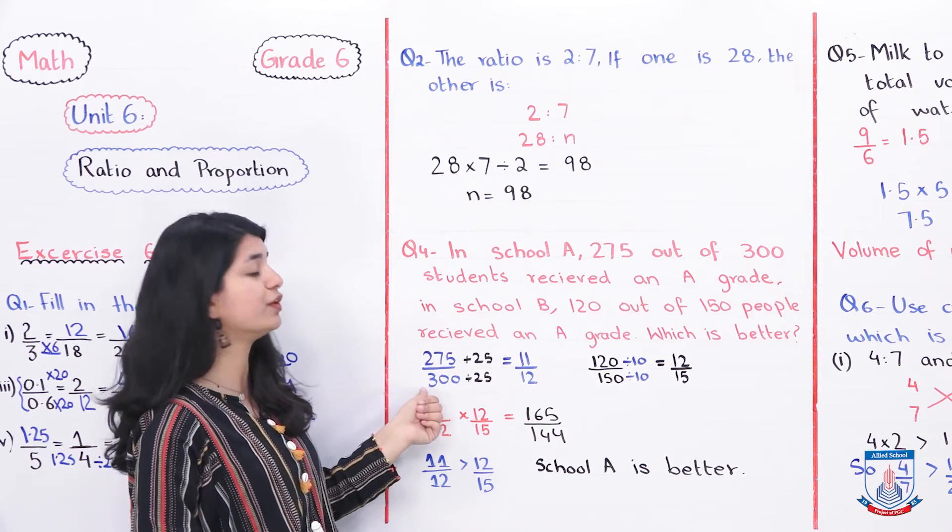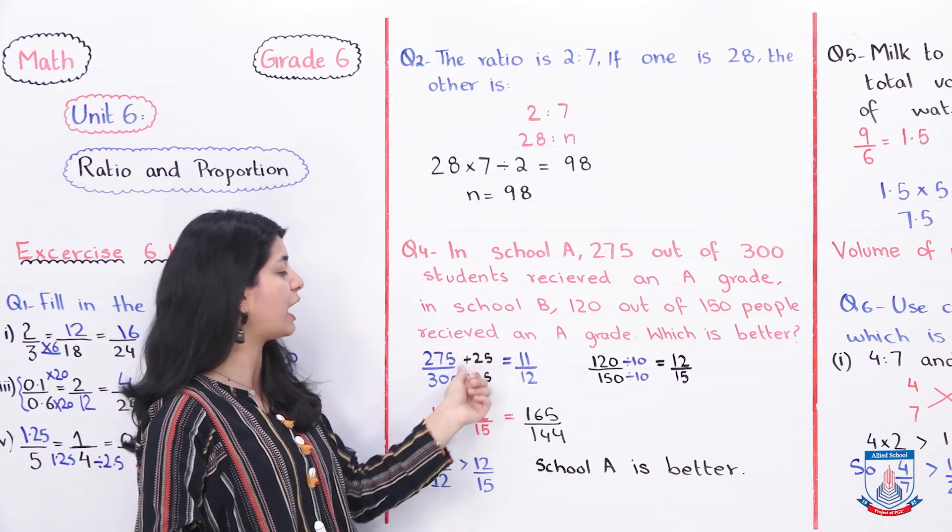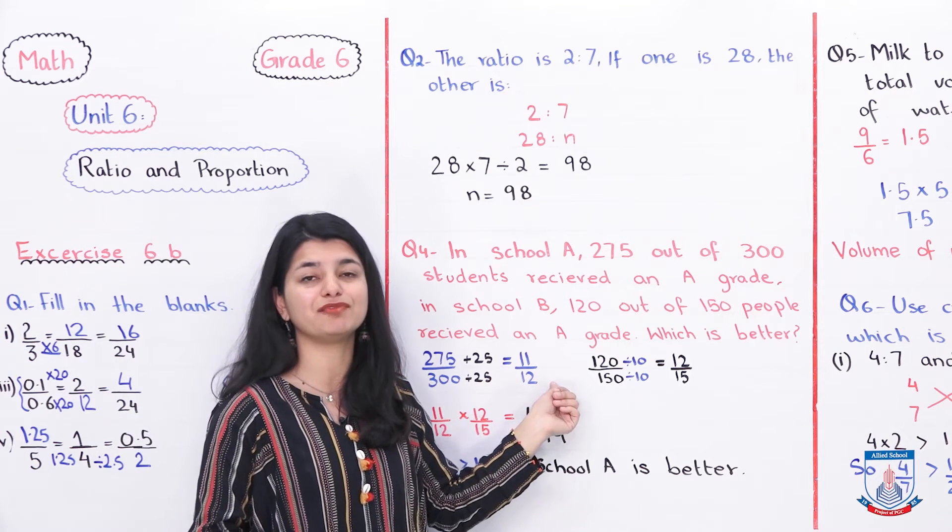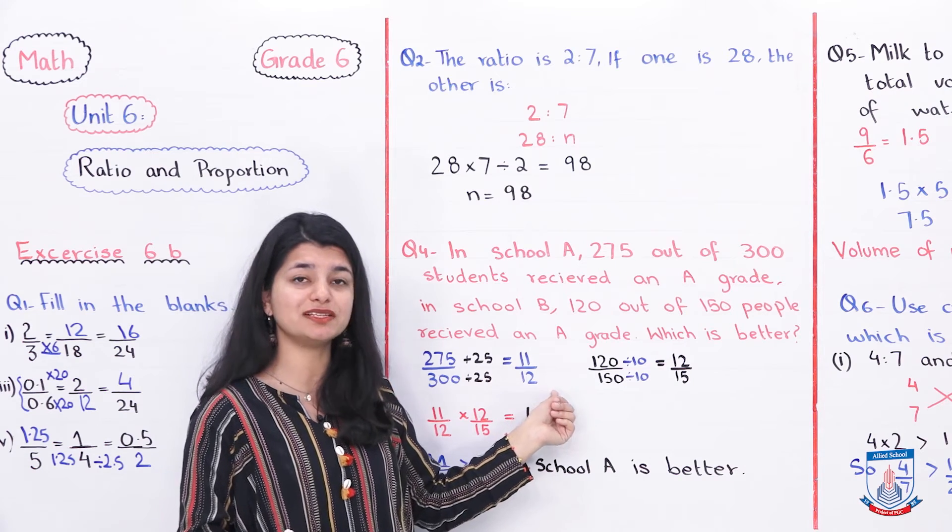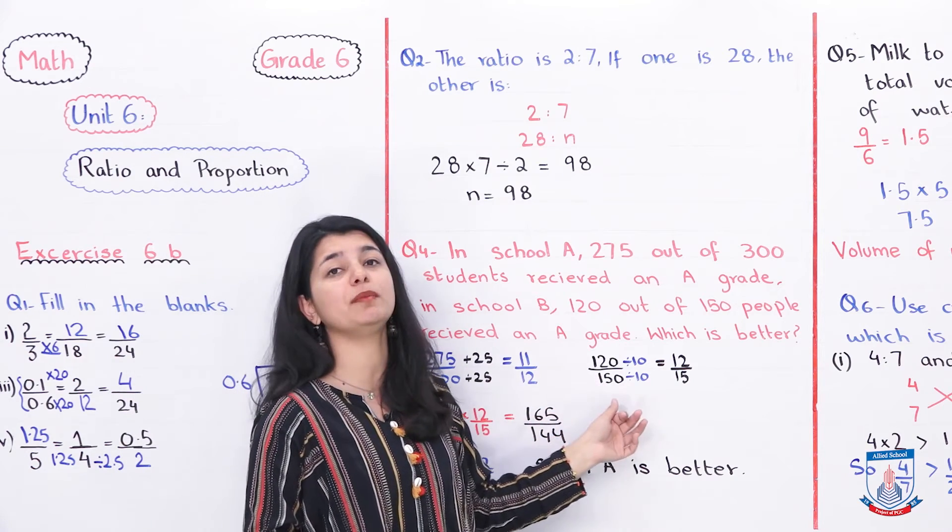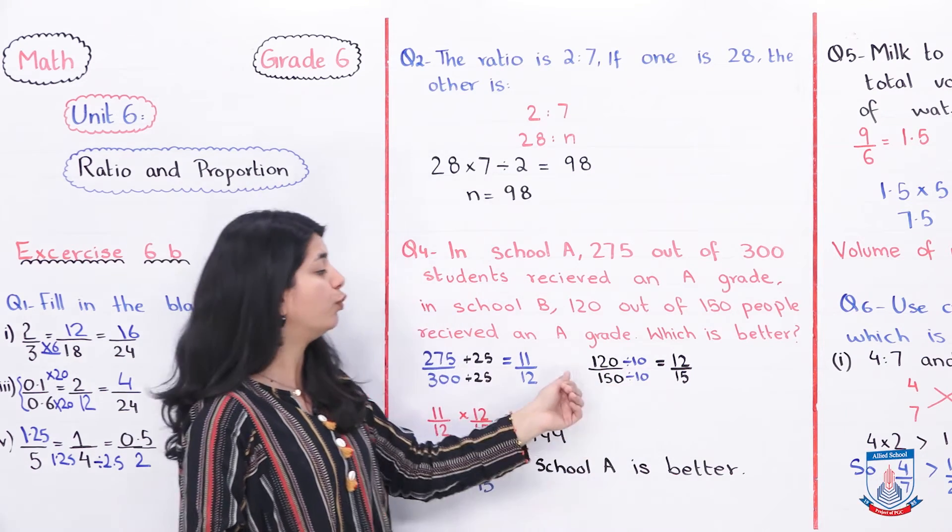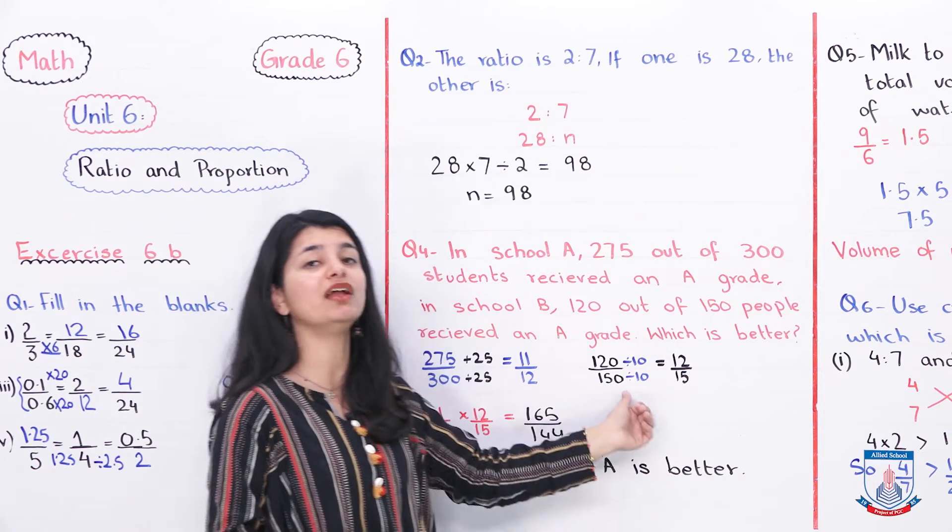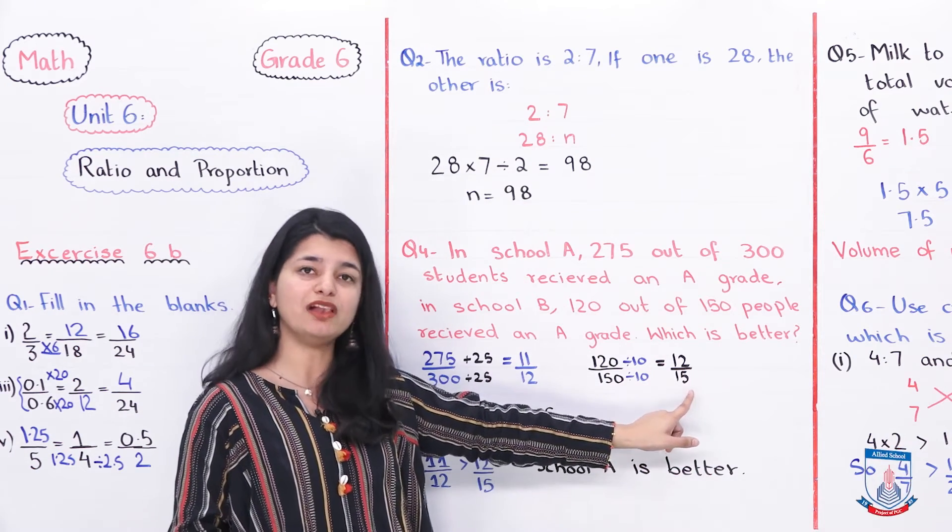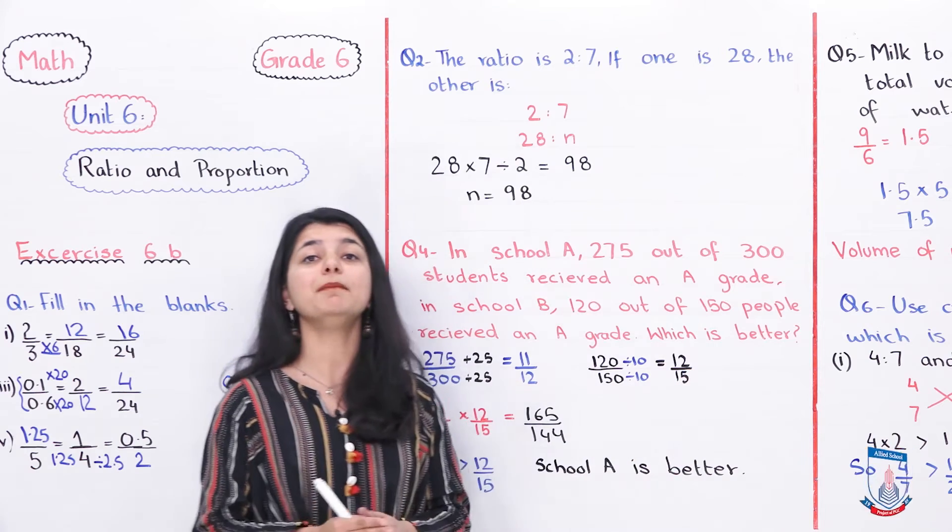For that, first for my personal ease, you don't have to necessarily do this. If you don't want to simplify, that's also fine. But I first simplified both of these fractions. If you look at it, I simplified 275 over 300. Both are divisible by 25, so I divided both by 25 and got 275 divided by 25 is 11, 300 divided by 25 is 12. This became my simplified fraction. That means for every 12 students in school A, 11 children get an A. Then we'll look at the second part. I had to simplify 120 over 150. Both are divisible by 10, so I took 10 common and divided both. 120 divided by 10 gives me 12, 150 divided by 10 gives me 15. When I got these two numbers, my resultant fraction becomes 12 over 15. That means for every 15 children in school B, 12 of them get an A grade.